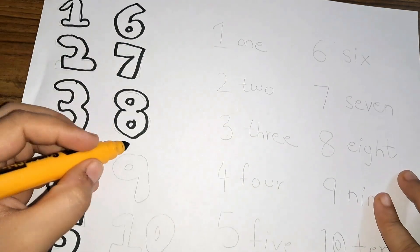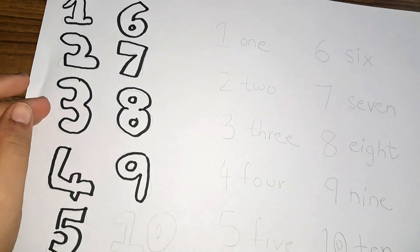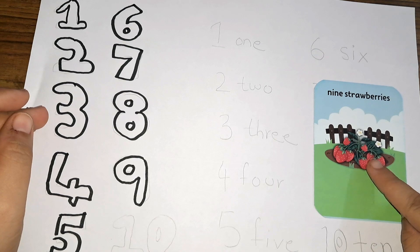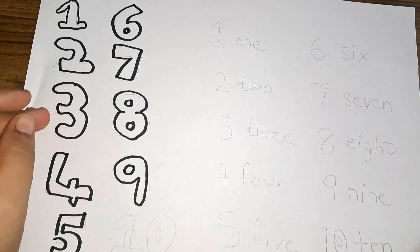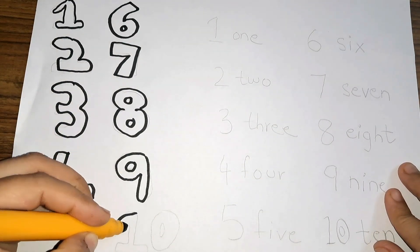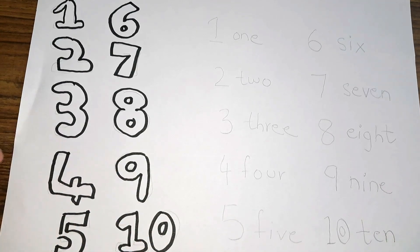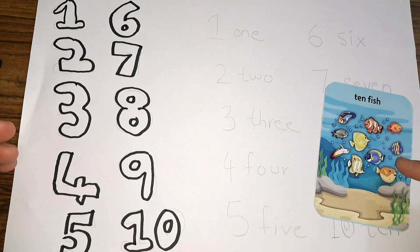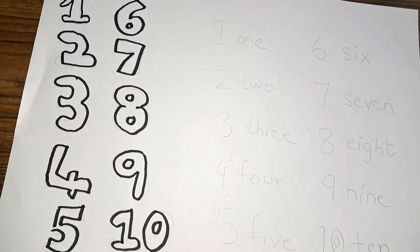Number 8 — 8 apples: 1, 2, 3, 4, 5, 6, 7, 8. 8 apples. Number 9 — 1, 2, 3, 4, 5, 6, 7, 8, 9. 9 strawberries. Number 10 — 10 fishes: 1, 2, 3, 4, 5, 6, 7, 8, 9, 10. 10 fishes.